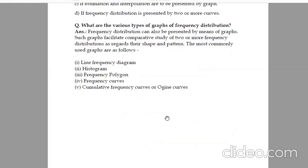What are the various types of graphs of frequency distribution? Frequency distribution can also be presented by means of graphs. Such graphs facilitate comparative study of two or more frequency distribution as regards their shape and pattern. The most commonly used graphs are as follows: line frequency diagram, histogram, frequency polygon, frequency curves, cumulative frequency curve or Ogive curves. These are the points of diagram, graphic graphs.